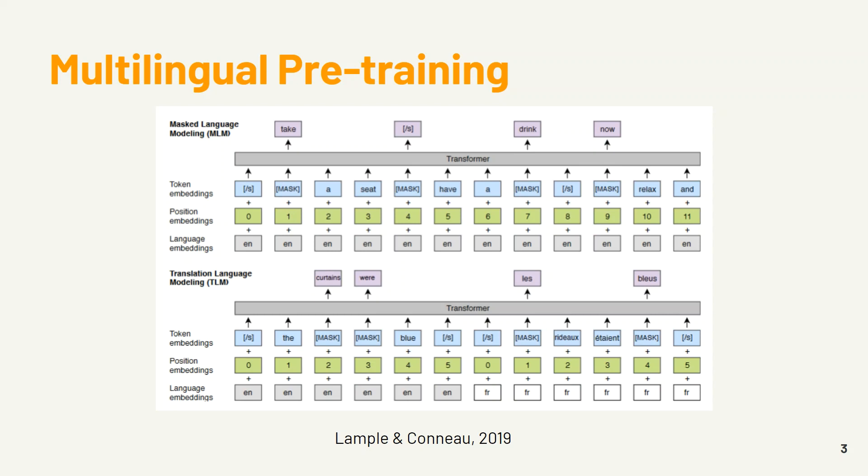They introduced a new objective called TLM, which stands for Translation Language Modeling. It is like MLM, but they specify the language embedding for each token to show in which language the token should be predicted. They also show that the position embedding should start from zero in the output sentence, and by that the model is trained with an encoder-decoder approach. This is a sequence-to-sequence model for multilingual translation that solves the issue with the MLM objective and the need for training a new model for translation between two new languages.